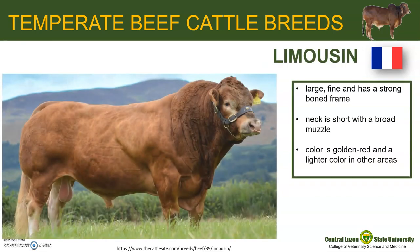Limousin also originated from France and it is believed the breed was as old as the European continent itself. The head is small and short with a broad forehead, and the neck is short with a broad muzzle. Coat color is golden red with a lighter color under the stomach, inside the thighs, around the eyes and muzzle, and around the anus and end of the tail. The skin is free of pigmentation.